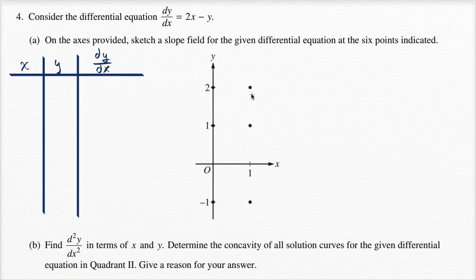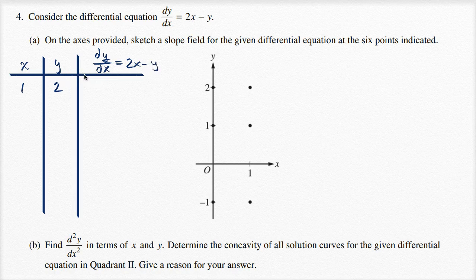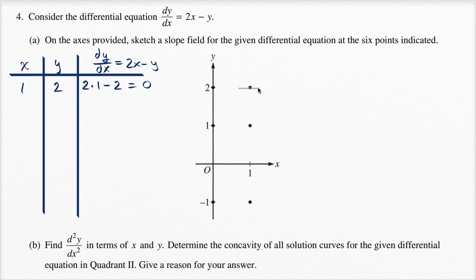Looking at the different points — this point right over here, when x is one and y is two. The derivative is two times x minus y, so it's two times one minus two, which is equal to zero. If the derivative there is equal to zero, I would draw a line with a zero slope — it would look something like that.